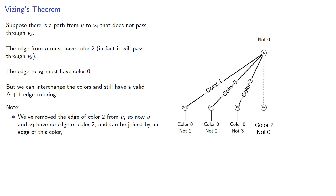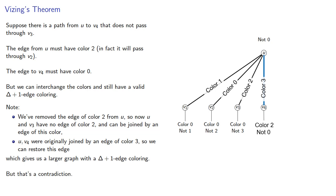And note that we have removed the edge of color 2 from u, so now u and v3 have no edge of color 2 and can be joined by an edge of this color. Meanwhile, u and v4 were originally joined by an edge of color 3, so we can just restore this edge, which gives us a larger graph with a delta plus 1 edge coloring. But that's a contradiction, because we assumed that we had the largest such graph.